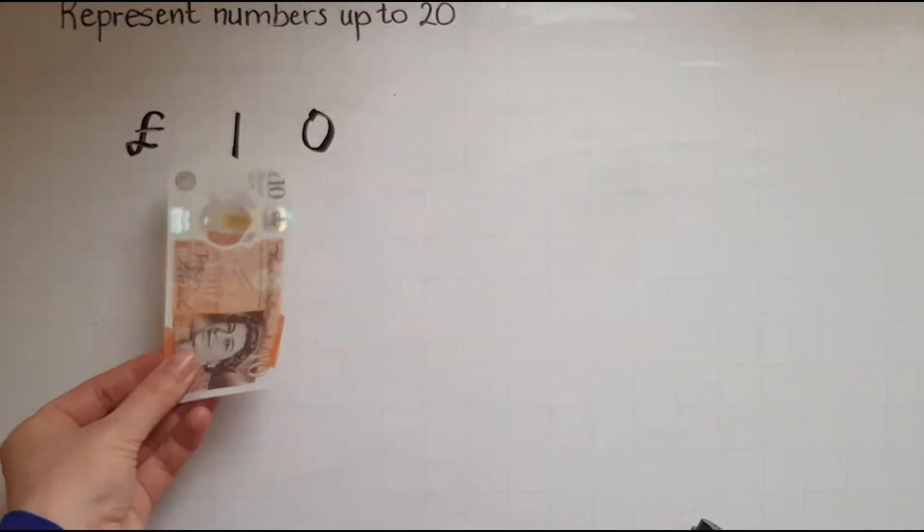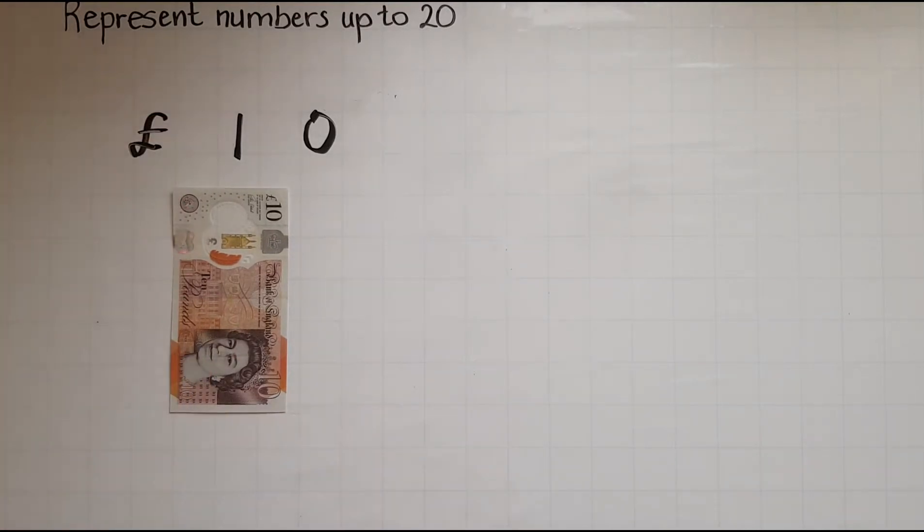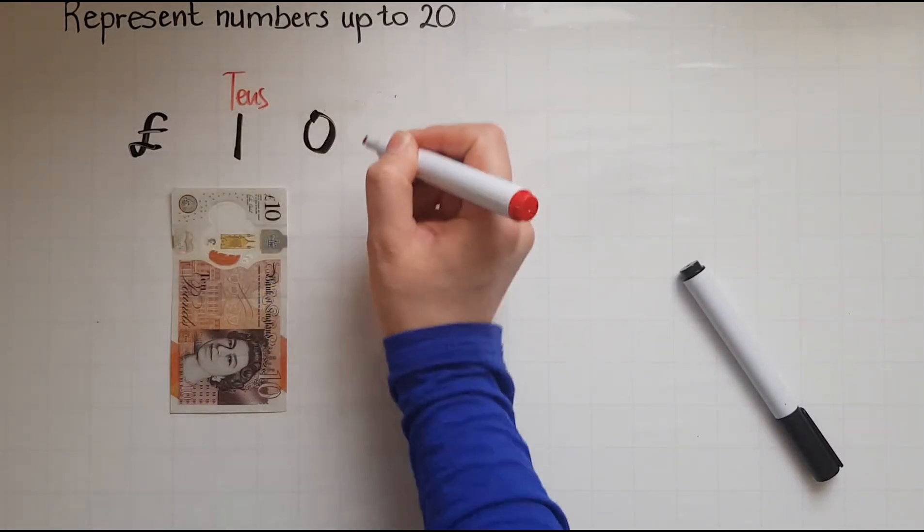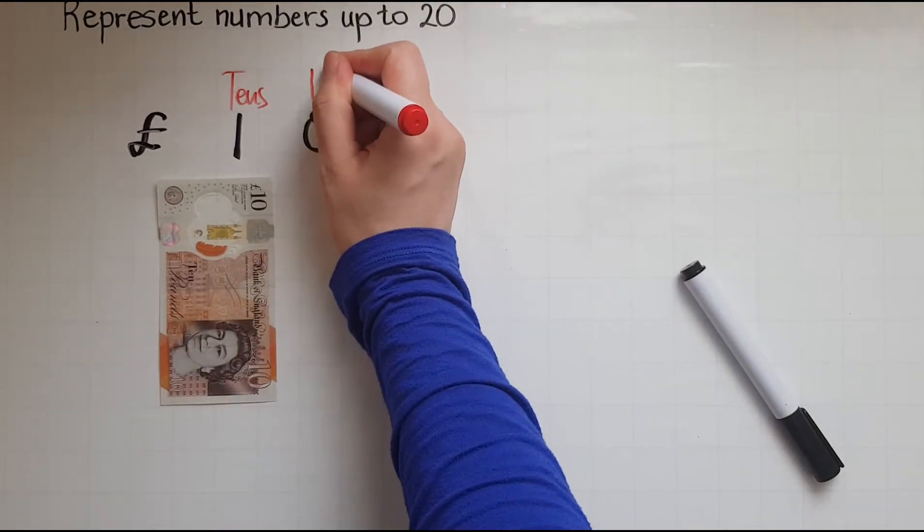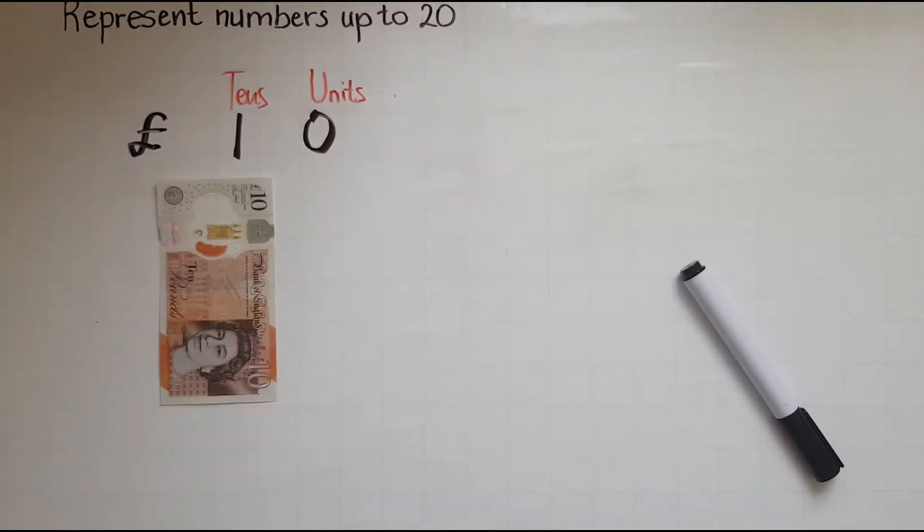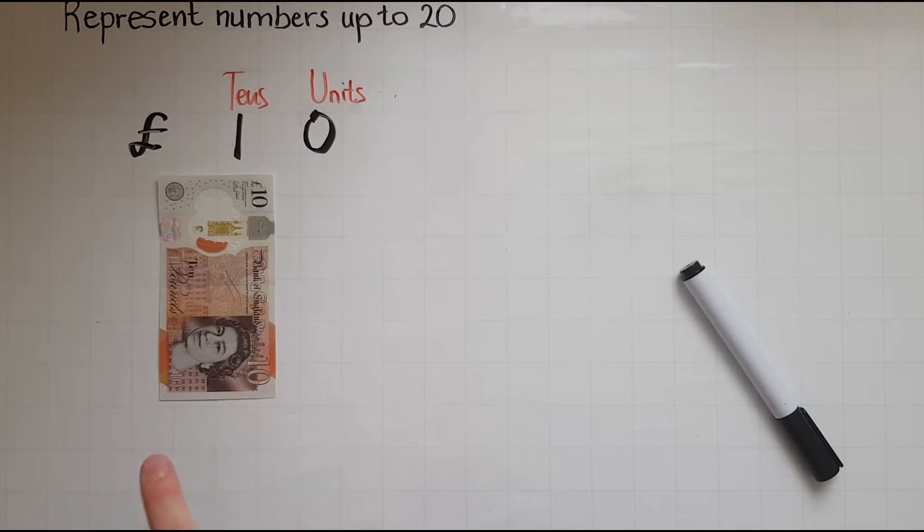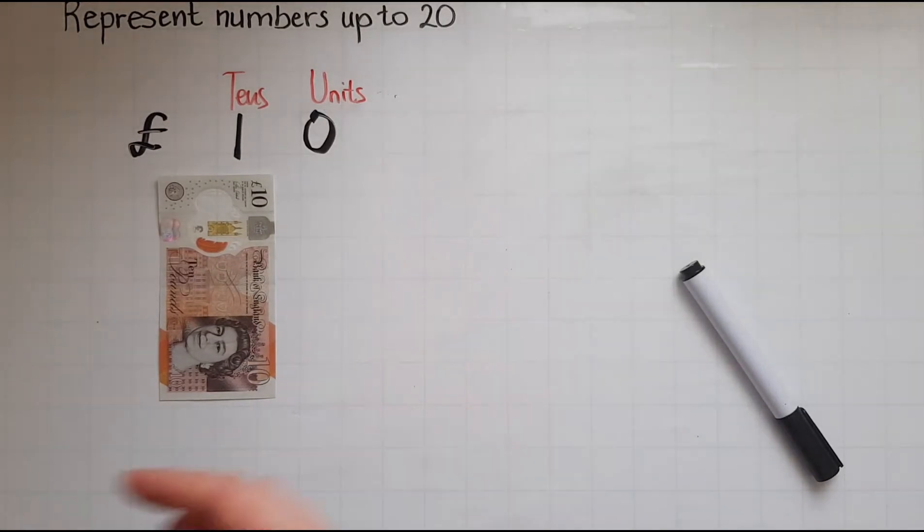Where do I place it? I'll place it under this column which we call the tens. So I have no single pound coins or units but I have just a ten pound note. So that's where its place is and this is where the place for the pound coins is.